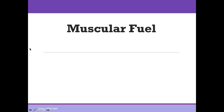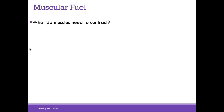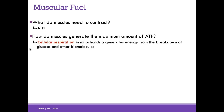Muscles need ATP — now we know why: for the myosin power stroke. How do muscles get ATP? Cellular respiration in mitochondria generates ATP from the breakdown of glucose and other biomolecules. Oxygen is required — the maximum amount of ATP is made during aerobic cellular respiration. Muscles generate the most ATP when oxygen is present, when mitochondria can do aerobic respiration breaking down glucose into ATP. Muscles have abundant myoglobin that stores excess oxygen and transfers it to mitochondria as needed.